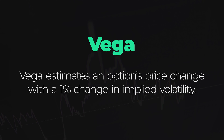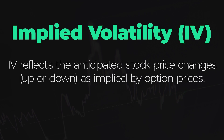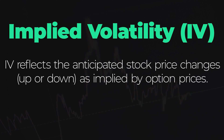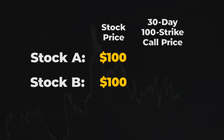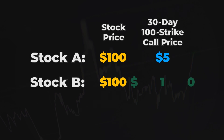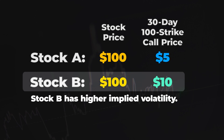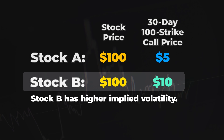The fourth option Greek to understand is called Vega. Vega indicates the expected changes in an option's price corresponding to a 1% shift in implied volatility. Implied volatility reflects the anticipated fluctuations in a stock's price over a specific period as implied from option prices. For instance, consider two $100 stocks with 30-day call options at the same strike price — if the first stock has a call priced at $5 and the other at $10, the second scenario results in higher implied volatility because the elevated option price suggests the market anticipates more stock volatility.